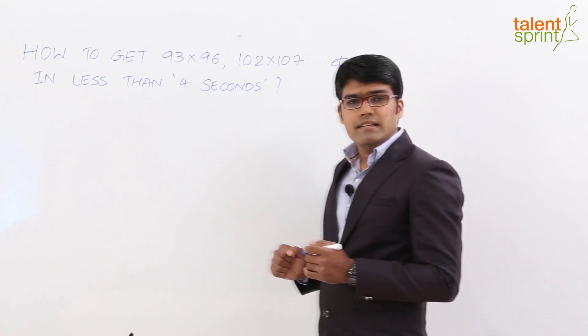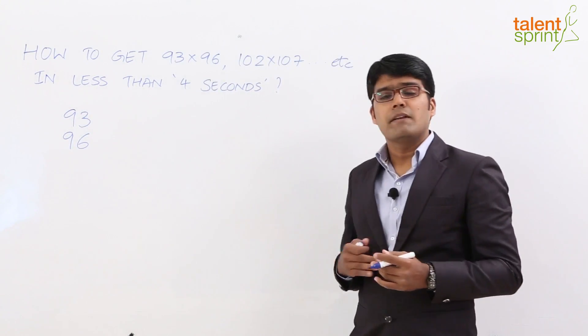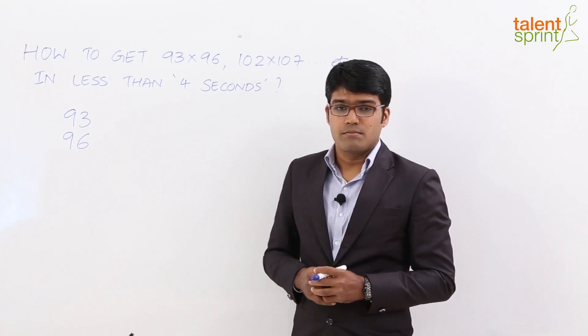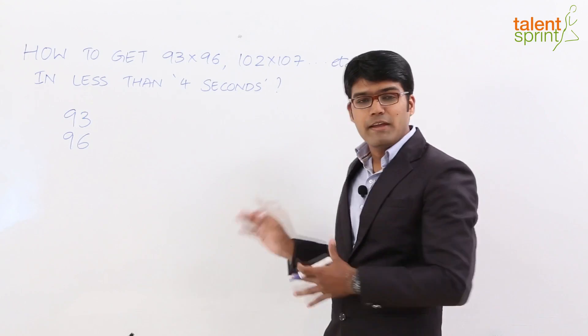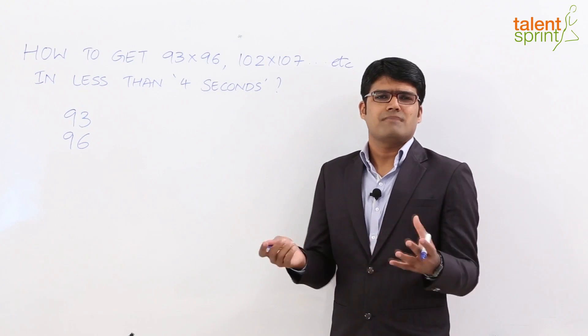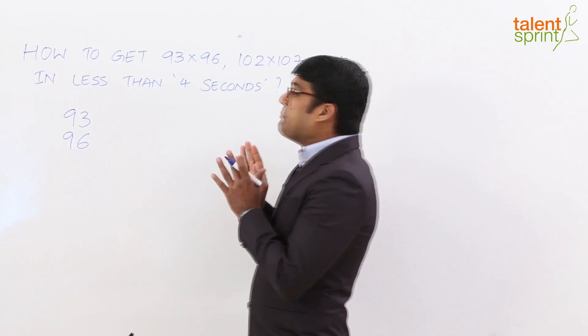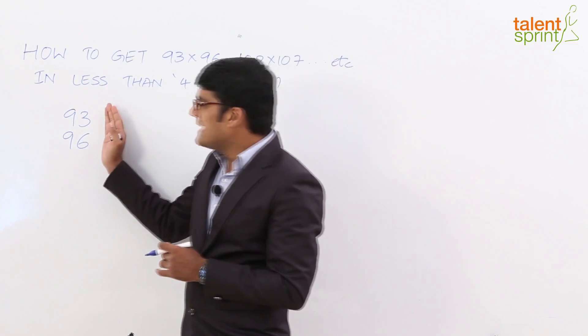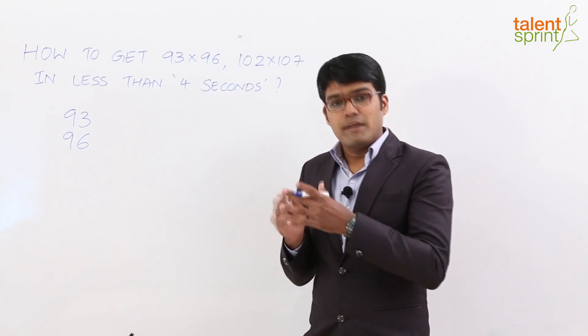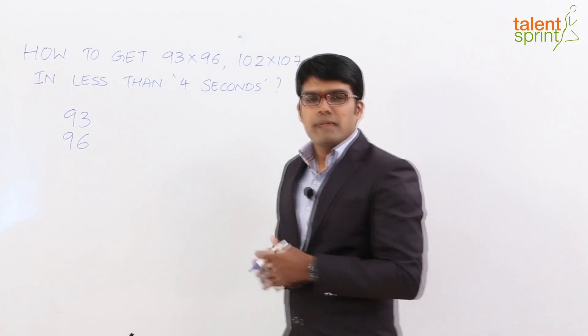Let us consider 93 into 96. Now you very well know that if you go by the conventional multiplication, it would take about 8 to 10 seconds to get the required answer. But here we are going to look at a smart way in which you will be able to get the multiplication of such numbers in about 4 seconds. Now all we need to do here is look at the base value that is 100. As you see, both 93 and 96 here are closer to 100. So with respect to 100, we are trying to understand how far are these 2 numbers and then multiply accordingly.